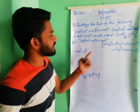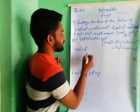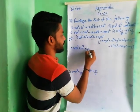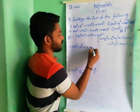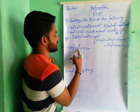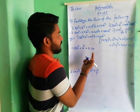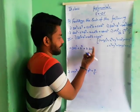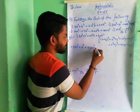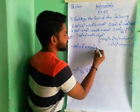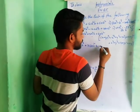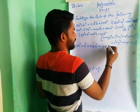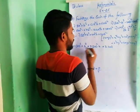So x cube plus y cube is set. For 3x square y: 3 into (2a) square into y. Here x value is 2a. And for 3xy square: 3 into x — where x value is 2a — and y value is b.